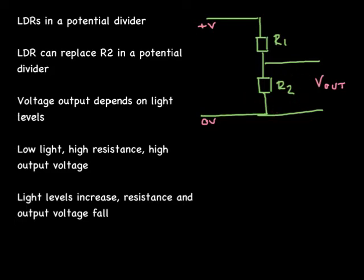So if we replace R2 with an LDR we have a way of changing the output voltage depending on the light intensity.